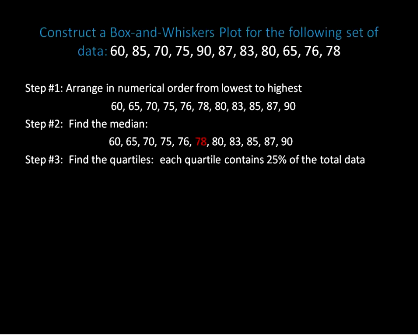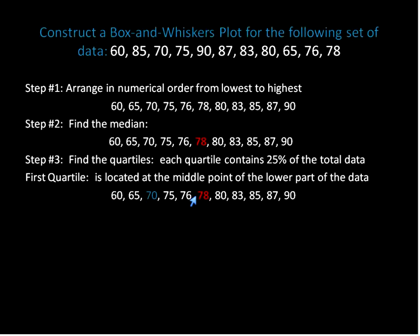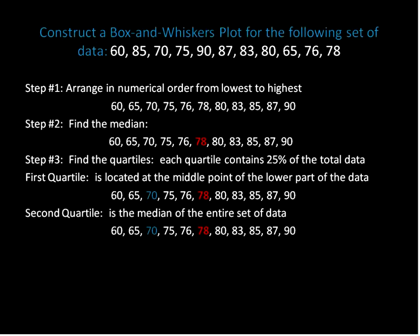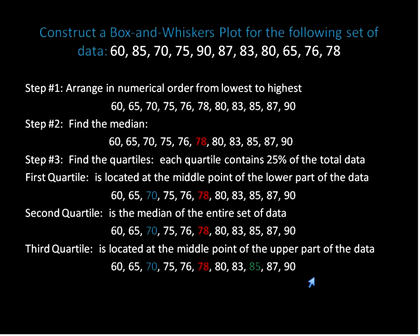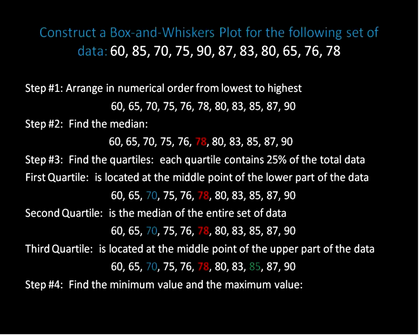Step three: find the quartiles. The first quartile is the median of the lower half, and the third quartile is the median of the upper half. So we basically find the median three times: the median of the entire set, which is 78; the median of the lower set, which is the first quartile; and the median of the upper set, which is 85. Step four: find the minimum and maximum values. The minimum is 60 and the maximum is 90.